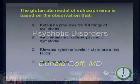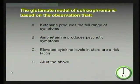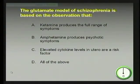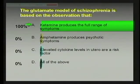The glutamate model of schizophrenia is based on the observation that A, ketamine produces the full range of symptoms; B, amphetamine produces psychotic symptoms; C, elevated cytokine levels in utero are a risk factor; and D, all of the above.